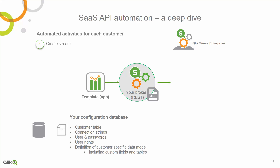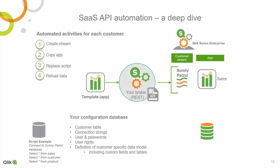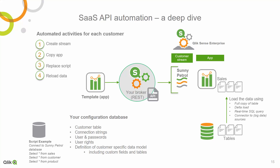First, it will create a stream for each customer. Secondly, it will copy the template app. Next, it replaces the script with a customer-specific one, or in most cases, you just have to replace the database connection. Using the new script, the app is reloaded — this is where we basically make a compressed copy of the data and create the associative model. In the final stage, we publish the app in the stream with the name of the customer.